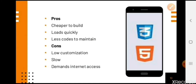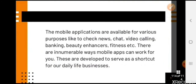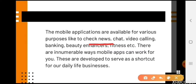These were the three main mobile application categories. Mobile applications are available for various purposes: checking news, chat, video calling, banking, beauty enhancers, fitness, and more. For news, there are many apps — ABP News, Zee News — and newspapers available online for reading. For live streaming, apps like Hotstar allow you to watch news channels. Jio's app lets you watch full cinema as well as read content.